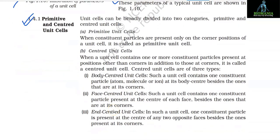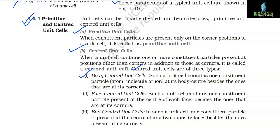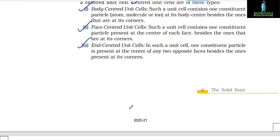1.4.1 Primitive and Centered Unit Cells. Unit cells are broadly divided into two categories: (a) Primitive unit cells — constituent particles present only on corner positions. (b) Centered unit cells — contain one or more constituent particles at positions other than corners in addition to those at corners. Centered unit cells are of three types: (1) Body-centered — one constituent particle at the body center besides those at corners; (2) Face-centered — one constituent particle at the center of each face besides those at corners; (3) End-centered — one constituent particle at the center of any two opposite faces besides those at corners.